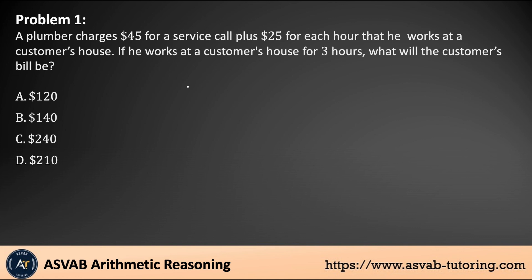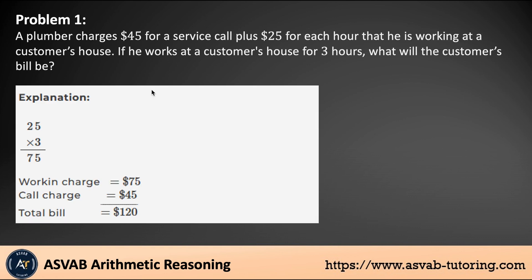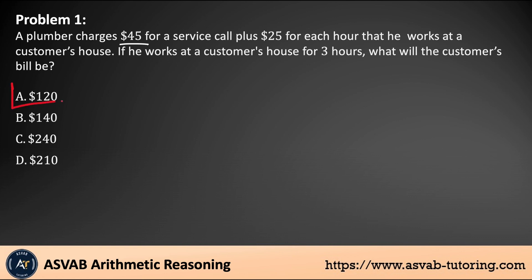When I read the question, first read it. If you don't understand the first time, read it again and then try to find the keywords. The plumber charges $45 — this is a one-time fee. Many people get confused with this $45. What you have to do first is multiply 3 times $25 because he worked three hours, and then add $45 to it. That gives you the total bill. 25 times 3 is 75, and then add $45 — that gives you $120. The correct answer is $120.